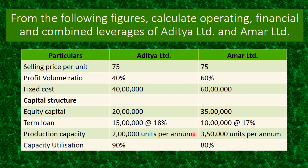This is the maximum production capacity. However, no company runs at 100% capacity — they always run below capacity. Capacity utilization for Aditya Limited is 90% and for Amar Limited is 80%. So capacity utilization: 90% of 2 lakhs is 1 lakh 80,000 units, and 80% of 3 lakh 50,000 is 2 lakh 80,000 units.